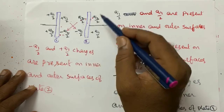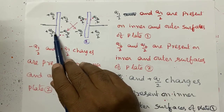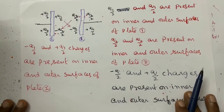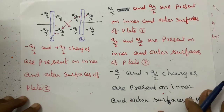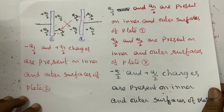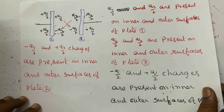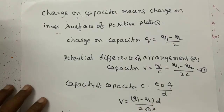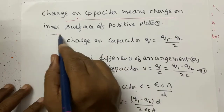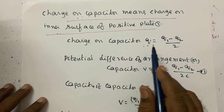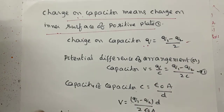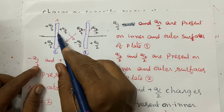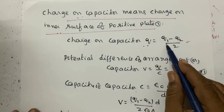The total charge on the outer surfaces of the two plates should be equal. The charge on the capacitor means the charge on the inner surface of the positive plate. From this arrangement, the charge on the capacitor Q equals Q1 minus Q2 divided by 2, where this is the positive plate and the other is the negative plate.